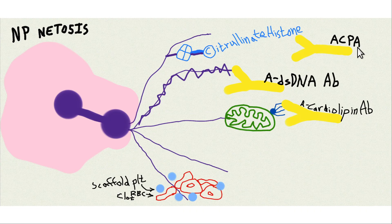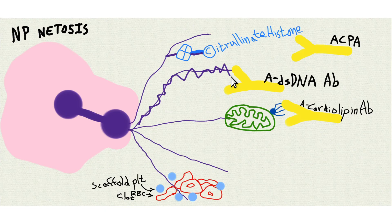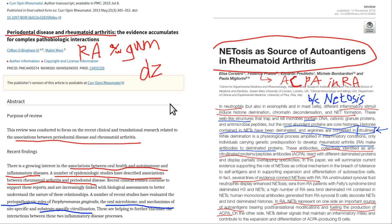The conversion of arginine to citrulline is called citrullination, and it's relevant because that's what you form auto-antibodies to in rheumatoid arthritis. The way this works is: gum disease bacteria grow, periodontal disease bacteria or their toxins get into the blood, and an immune response is formed with these auto-antibodies.